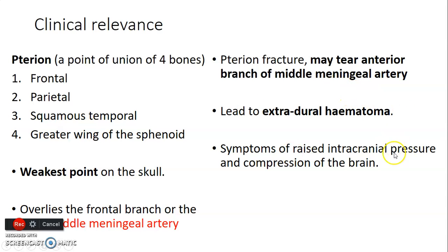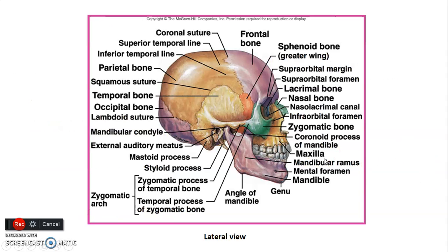The patient will develop symptoms of raised intracranial pressure because bleeding within the cranium increases pressure and compresses the brain. The pterion lies between the greater wing of sphenoid, squamous temporal bone, parietal bone, and frontal bone — the weakest point, overlying the anterior branch of the middle meningeal artery from the maxillary artery. Fracturing this bone may tear that artery and lead to extradural hematoma.